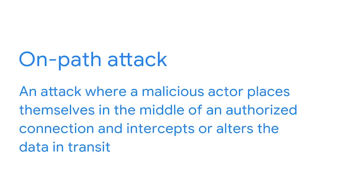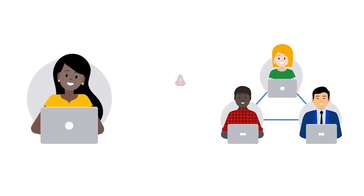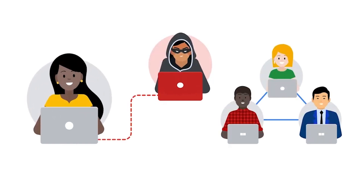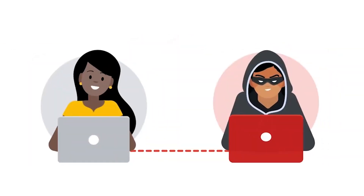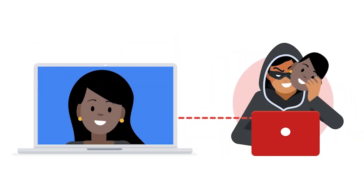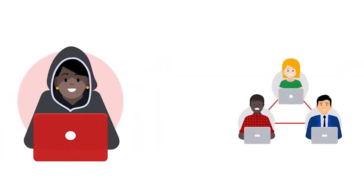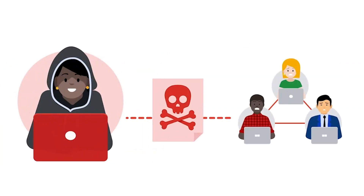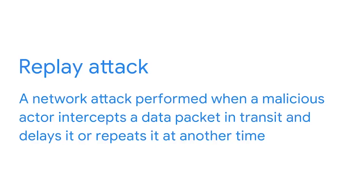An on-path attack is an attack where the malicious actor places themselves in the middle of an authorized connection and intercepts or alters the data in transit. On-path attackers gain access to the network and put themselves between two devices, like a web browser and a web server. Then they sniff the packet information to learn the IP and MAC addresses of the two communicating devices, after which they can pretend to be either of those devices. Another type is a replay attack, where a malicious actor intercepts a data packet in transit and delays it or repeats it at another time.